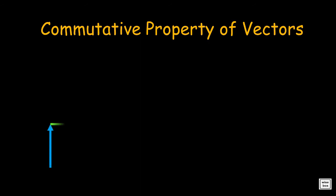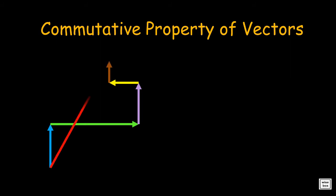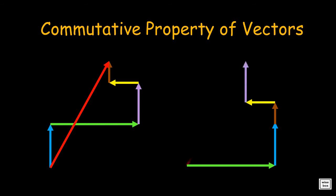This shows the commutative property of vectors — interchanging the order of the vectors does not affect the result. It still gives you the same resultant.